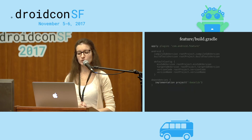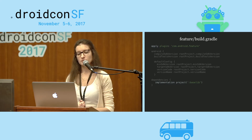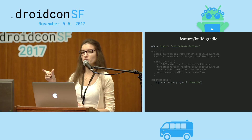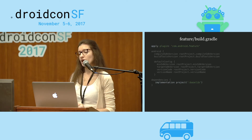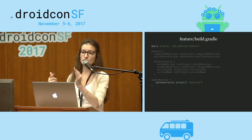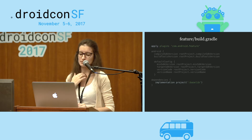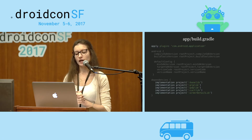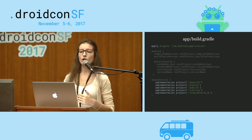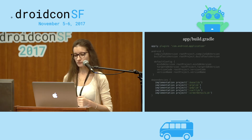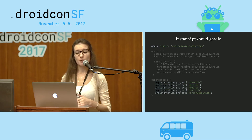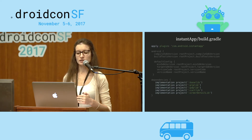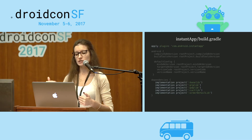The build.gradle file of a feature module uses the plugin com.android.feature, and in the dependencies block, you just tell the feature that it depends on the Base Module. You can also specify libraries used only within one feature rather than the whole application. The build.gradle of the App Module uses com.android.application, and in dependencies you reference all feature modules plus the Base Module. The Instant App Module's build.gradle is very similar to the App Module, but uses the plugin com.android.instantapp, with the same dependency structure referencing all feature modules plus the Base Module.